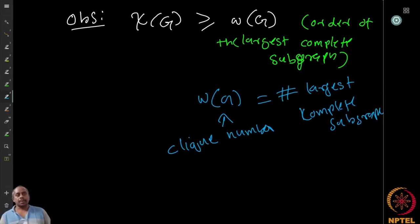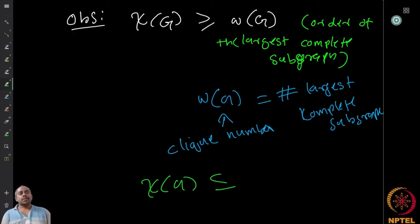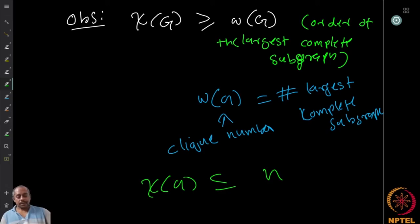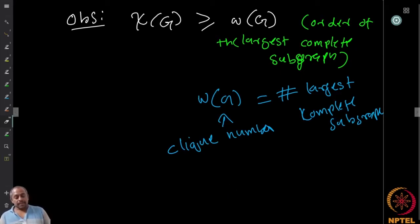We have a lower bound ω(G) ≤ χ(G). Now can we find an upper bound? Of course χ(G) ≤ n (total number of vertices), but that is a trivial bound. The question is: can we say χ(G) is at most something more useful? Think about this for a few minutes before we proceed to an application.